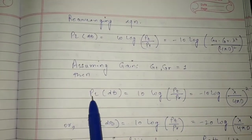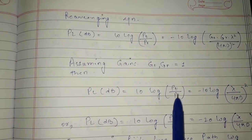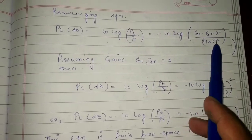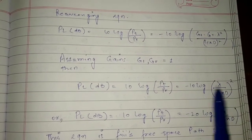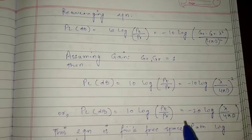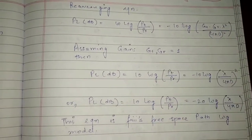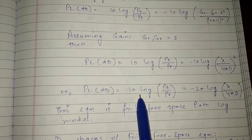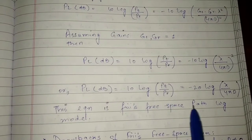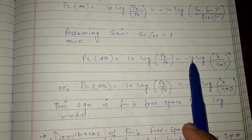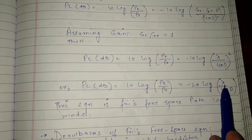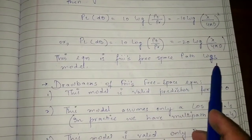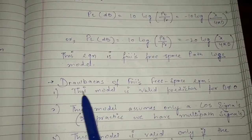Substituting GT = GR = 1, path loss in decibels equals 10 log(PT/PR) = −10 log[λ² / (4πD)²] = −20 log(λ / 4πD). This equation is known as the Friis free space path loss model.